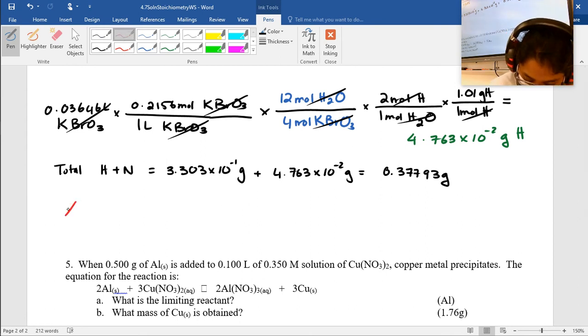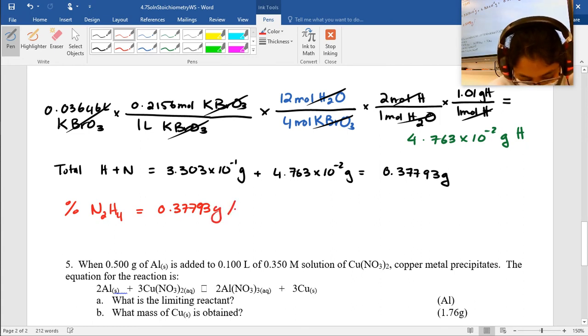So now simple. I have to find my percent of N2H4. That's going to be 0.37793 grams divided by my 0.4565 grams of N2H4, which is what's given in the problem. And let me do this, times that by 100. So one line of work.